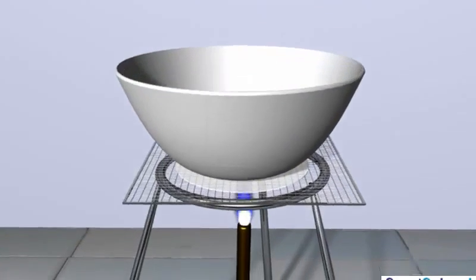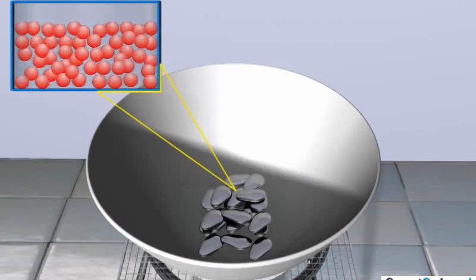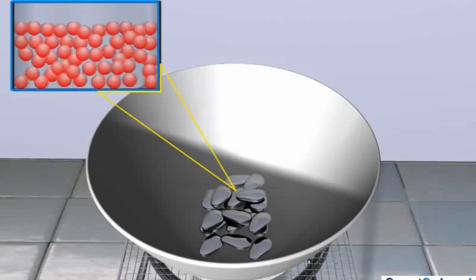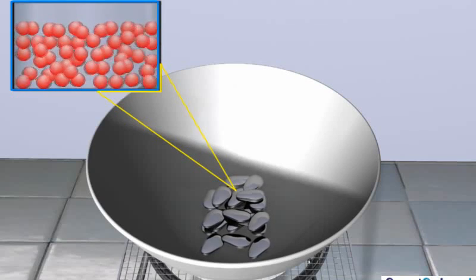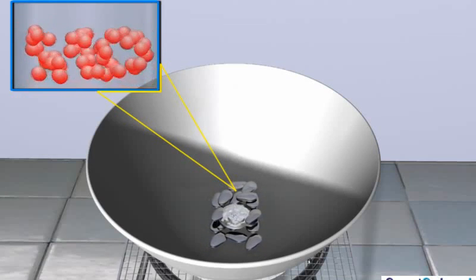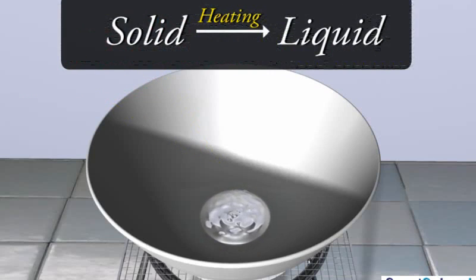When heat is supplied to a crystalline solid, the kinetic energy of its constituent particles increases. Due to this increase in kinetic energy, the particles start vibrating with greater speed. On further increasing the temperature, the energy supplied in the form of heat overcomes the force of attraction between the particles and causes them to flow, thereby leaving their fixed positions. Eventually, the solid melts and is converted into liquid.